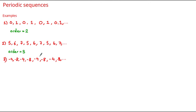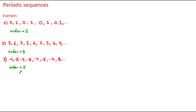Let's have a look at the next example: minus 4, minus 8, minus 4, minus 8, minus 4, minus 8, and so on. Here we can see that we have a periodic sequence with negative numbers where the order in this case would be equal to 2.